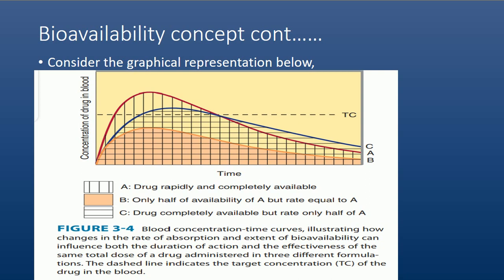Consider the graphical presentation about bioavailability. Starting with the interpretation of Drug A — as you can see from the graph, Drug A is rapidly and completely available. The MTC means the minimum target concentration of the drug required within the systemic circulation. For Drug A, the drug is rapidly and completely available.